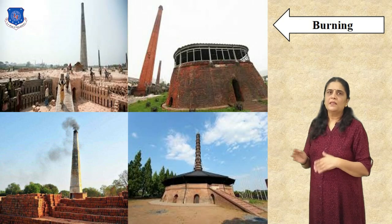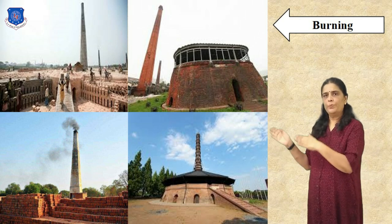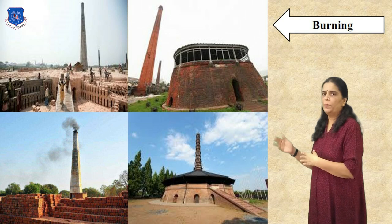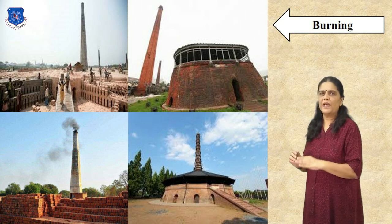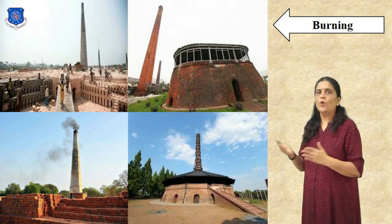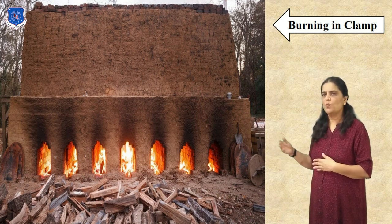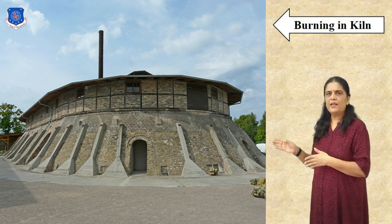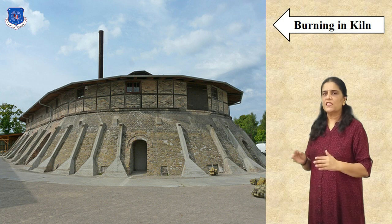Now, burning process. This is a very important operation in the manufacturing of bricks. It imparts hardness and strength to the bricks and makes them dense and durable. The bricks should be burned properly. If bricks are over burned, they will be brittle and hence break easily. If they are under burned, they will be soft and hence cannot carry loads. The burning of bricks is done either in clamps or in kilns. The clamps are temporary structures and they are adopted for manufacturing bricks on a small scale to serve a local demand or specific purpose. The kilns are permanent structures and they are adopted for manufacturing bricks on a large scale. A kiln is a large oven which is used to burn bricks.